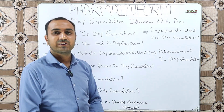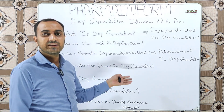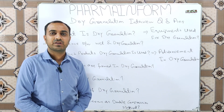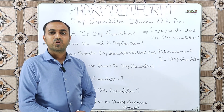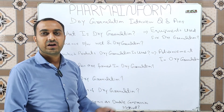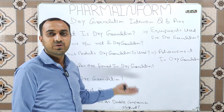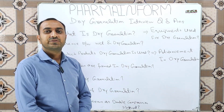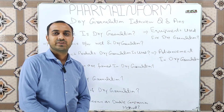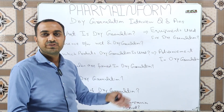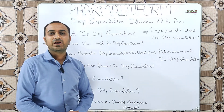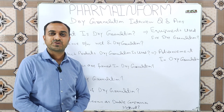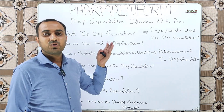The next question is: what are the other names of dry granulation? The other names of dry granulation are the double compression method or the slugging method. The next question is: why is dry granulation known as the double compression method?